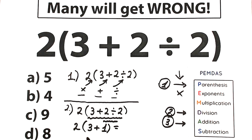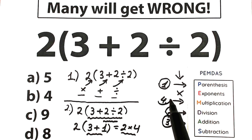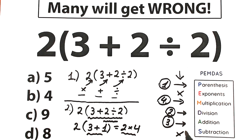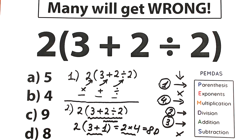So right here we have 2 times 4, and the last step is multiplication. Multiplication is our fourth step, and we don't have subtraction. So the answer is 8 — this is option D. The correct order was: parentheses, division, addition, and multiplication. This is the correct answer and correct order to this challenge.